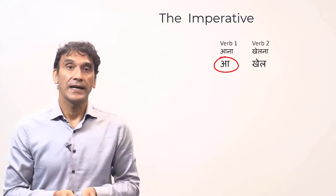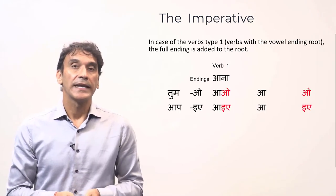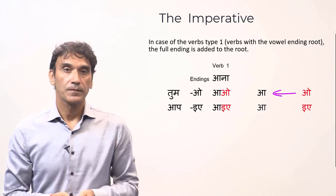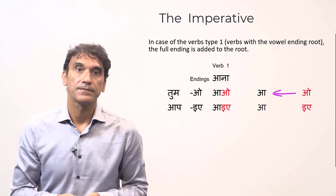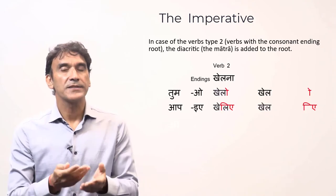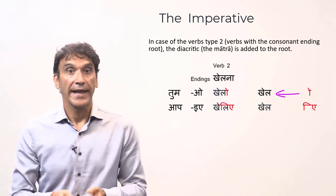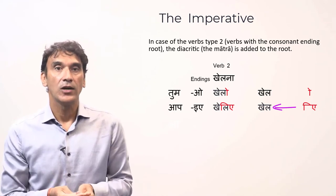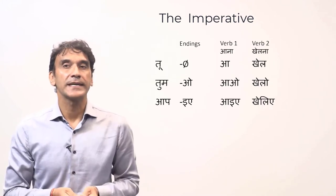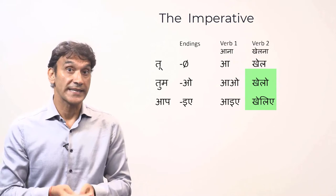The root of the first verb ends in 'aa' — it is a vowel-ending root. The root of the second verb ends in a consonant — a consonant-ending root. For a vowel-ending root, you write the full vowel ending: the full '-o' is written for 'tum,' and the full '-iye' is added for 'aap.' For a consonant-ending root like 'khel,' the diacritic '-o' (matra) is added to form 'khelo,' and the diacritic '-iye' is added to form 'kheliye.' The full vowel is not written when the root ends in a consonant.